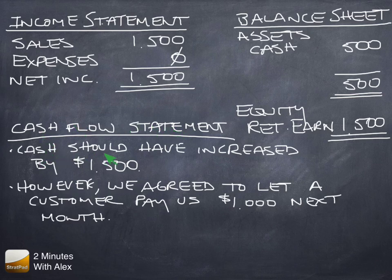We know that cash should have increased by $1,500 from net income. However, we agreed to let a customer pay us $1,000 next month.